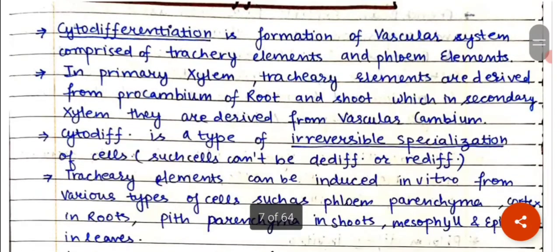In primary xylem, tracheid elements are derived from the procambium of the root and shoot, which is in the secondary xylem. They are derived from the vascular cambium.